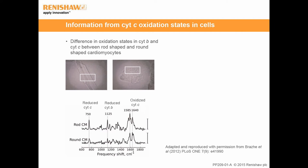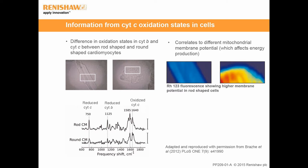By Raman imaging of cells, we can show the different oxidation states of heme proteins within the cell. A study by Brazas and colleagues published in PLOS ONE showed cytochrome B and cytochrome C in different oxidation states in rod and round-shaped cardiomyocytes. Rod-shaped cardiomyocytes are known to be more efficient in energy production. Raman spectroscopy showed that cytochrome C in the mitochondria of rod-shaped cardiomyocytes was more reduced than in round cardiomyocytes, correlating with higher mitochondrial membrane potential as shown by rhodamine-123 staining. The authors proposed a correlation between the level of reduced cytochrome C, intermembrane potential and energy production efficiency.